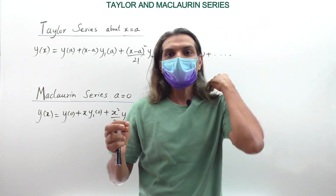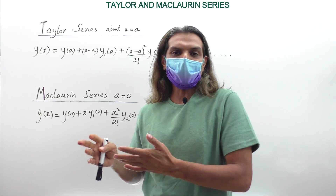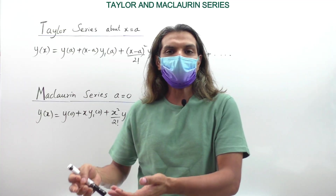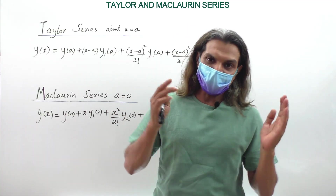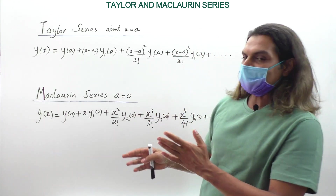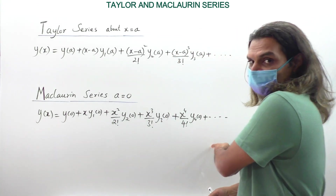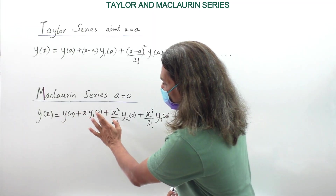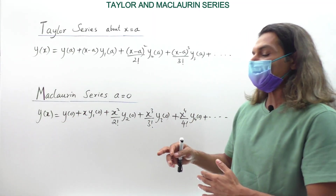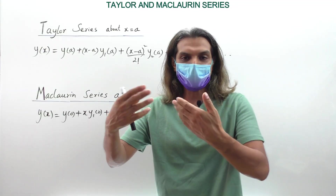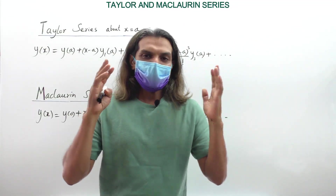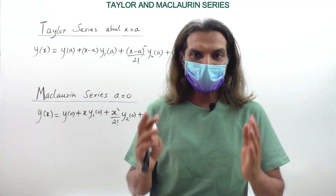If they ask about 4 terms, you have to differentiate 4 times. If they ask 3 terms, differentiate 3 times. That's it — this is how it works. When the question says expand up to 4 terms, you only need to find y(0), y₁(0), y₂(0), y₃(0), and y₄(0), which are the values of the function and its successive derivatives dy/dx, d²y/dx², d³y/dx³ at x = 0. Let's see how easy it is by solving some basic problems.